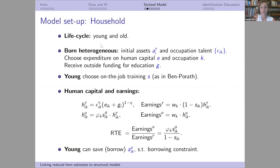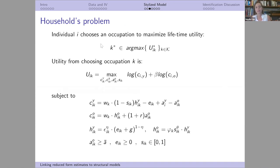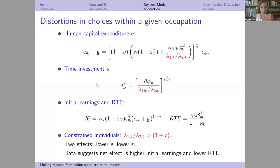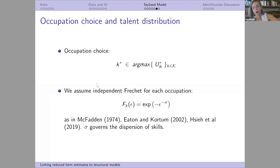The household's problem involves choosing not only on-the-job human capital investment but also occupations — a discrete choice problem loaded into this continuous choice problem. For every occupation, they calculate their lifetime utility, optimal human capital investment on the job, et cetera, and then choose the occupation K* that maximizes their utility out of all possible occupations.